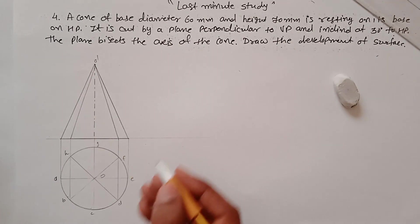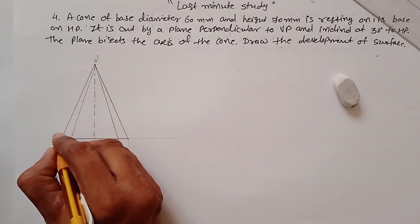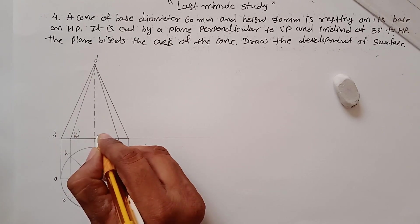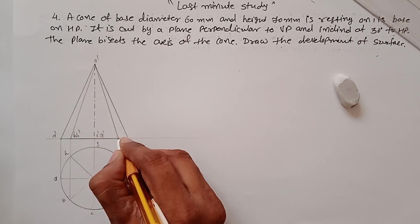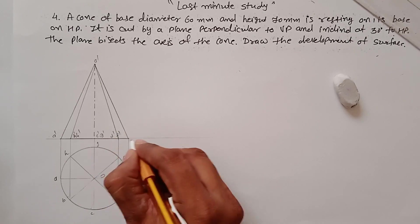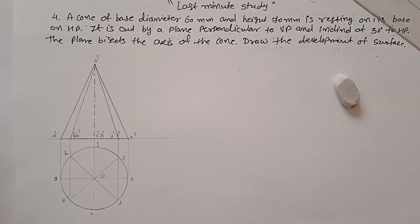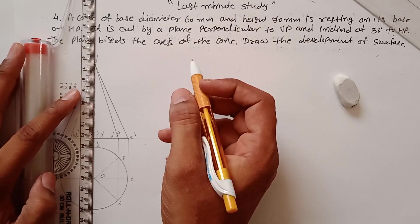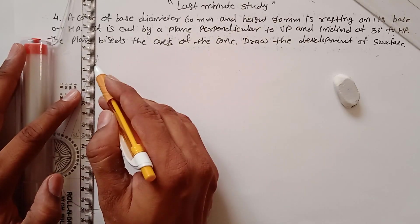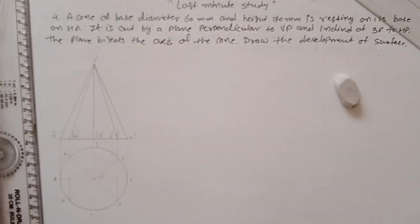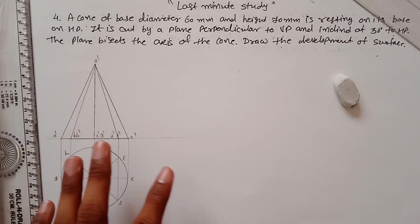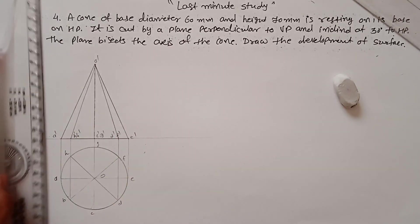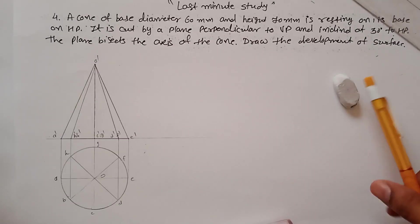Name the points in the front view: this point is O, this is A, this is B, H, C, D, E, G, D, E, F-dash, and A-dash. The axis here has a generator, so transfer it into a solid line. This is the development of your cone.